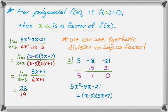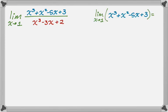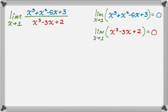Now let's use both of these ideas on a more challenging problem: the limit as x approaches 1 of x cubed plus x squared minus 5x plus 3, all over x cubed minus 3x plus 2. The first thing to try is direct substitution. Substituting 1 into the numerator gives 0, and substituting into the denominator also gives 0. Since both are polynomials and I got 0 in both cases, I know that x minus 1 is a factor of both the numerator and denominator.